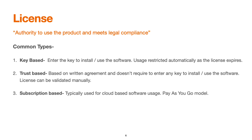Trust-based licensing involves a written agreement between the supplier and the user — no license key is required, and validation happens only through manual auditing to verify that the software is used per the terms and conditions. This is typically based on CPU cores, named user licenses, or the number of users in your user store. Subscription-based licensing is used for cloud-based offerings, with a typical pay-as-you-go model where you are charged based on your usage.